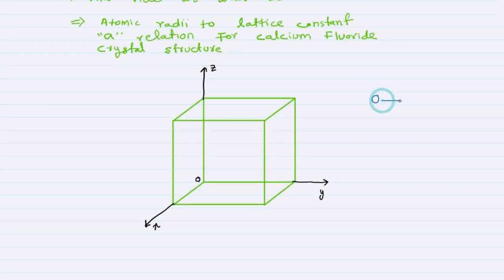In calcium fluoride, we have calcium at the FCC positions—all corners, eight corners, and six faces.